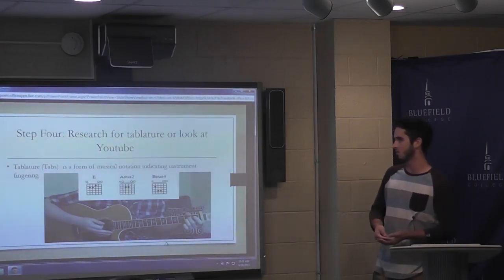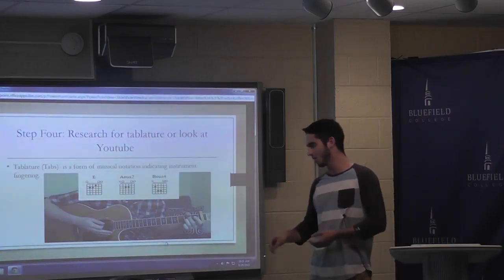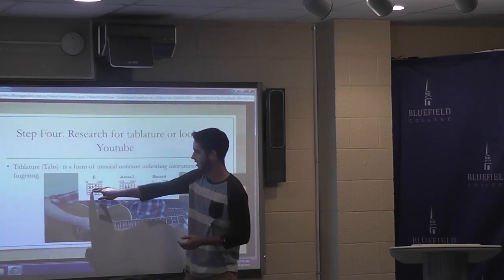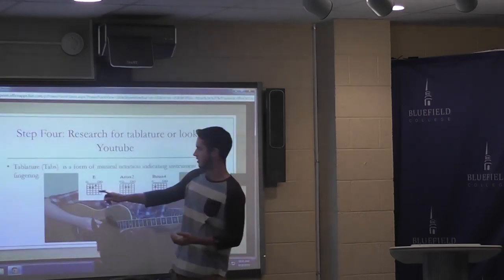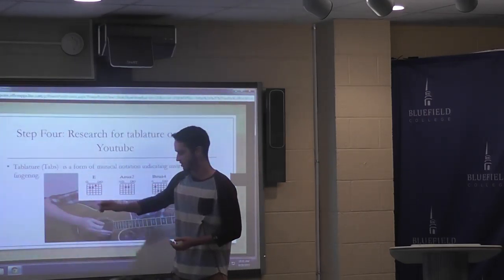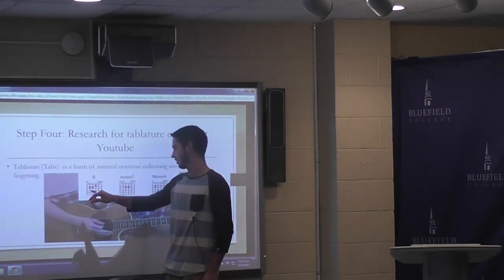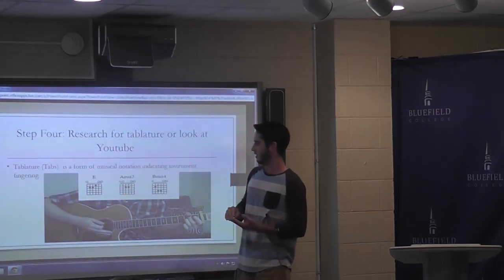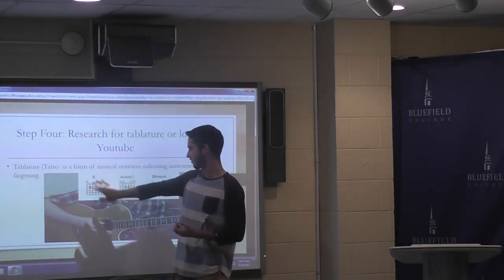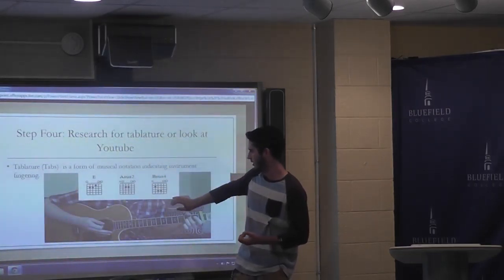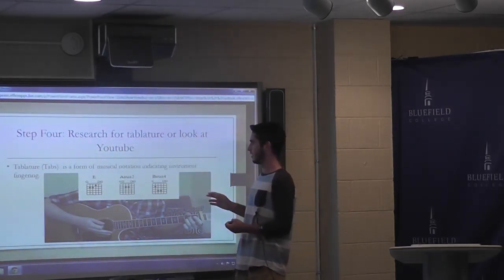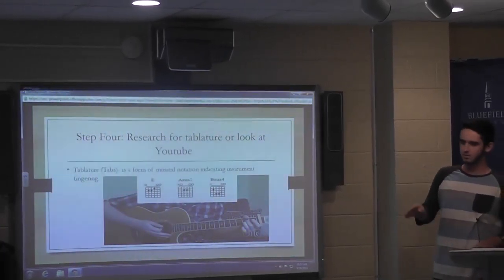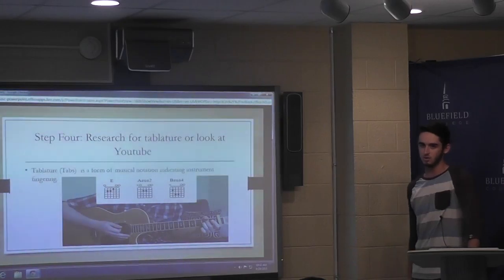Tablature is a form of music notation indicating instrument fingering. Here, the strings represent each string on the guitar — this is the top string, the E string, and then the second, third, fourth, fifth, and sixth strings below it. The numbers on the tab indicate which fret to play: the first chord, second chord, third chord. You can use YouTube or look up tabs online — there are websites for them. And if those websites don't help you, you can use YouTube as an alternative.